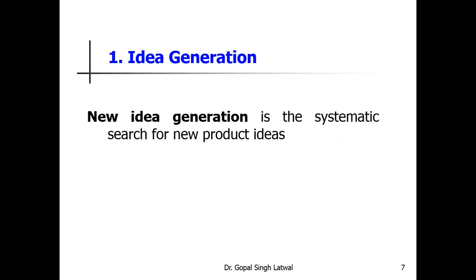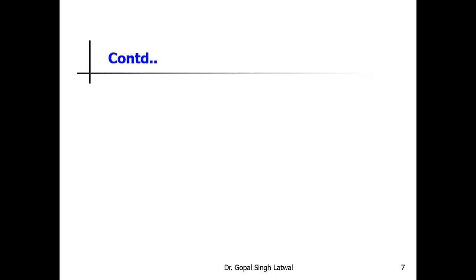The first stage is idea generation. Before producing any new product — a product with new features and new attributes — a company must have new ideas. Without new ideas, one cannot make a new product. The company must encourage their people to come up with new product concepts so that they can give birth to a new product. New product idea generation is basically a systematic search for new product ideas. Companies can use two types of sources: internal and external.